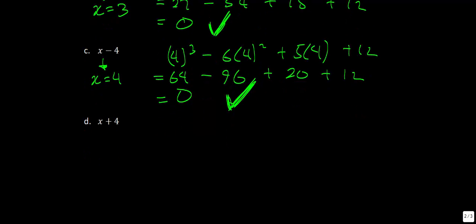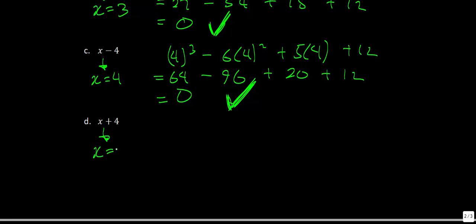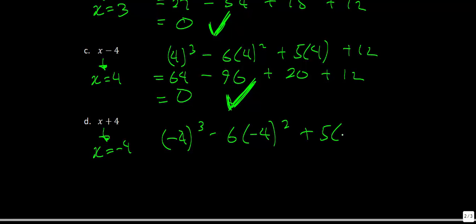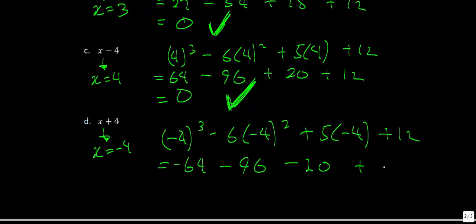Let's check x plus 4, substituting in negative 4: negative 4 cubed minus 6 times negative 4 squared plus 5 times negative 4 plus 12. Negative 64 minus 96 minus 20 plus 12 — that's clearly not equal to 0, so x plus 4 is not a factor. Remember, only when the result equals 0 is something a factor.